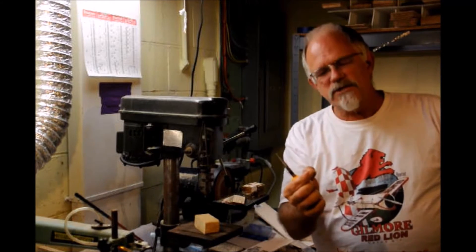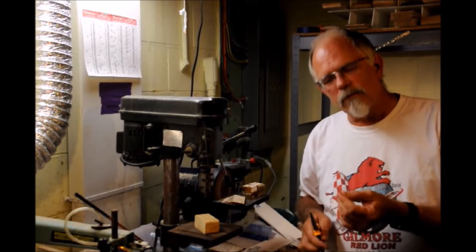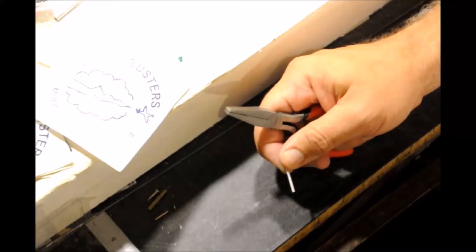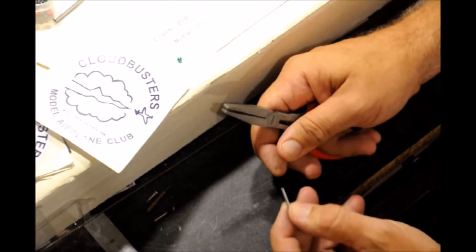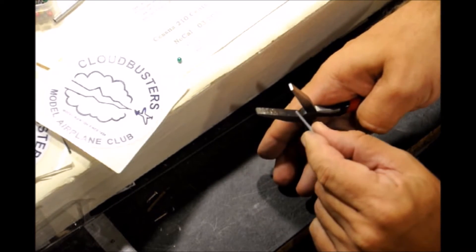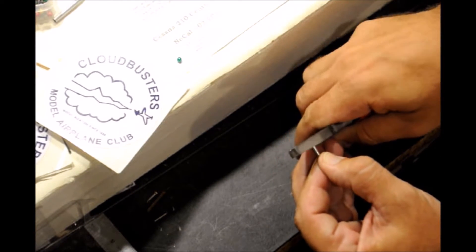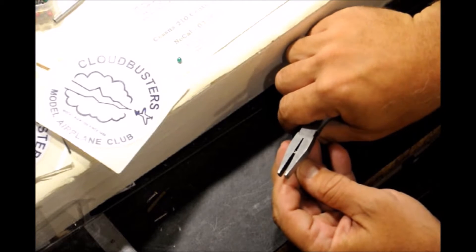We have the tubing that I cut and now what we need to do is flatten that tubing. To do that I just use a regular set of needle nose pliers, but be sure to use the flat area without the teeth.